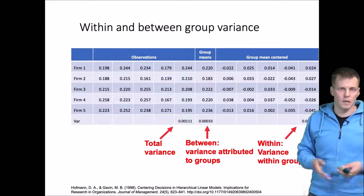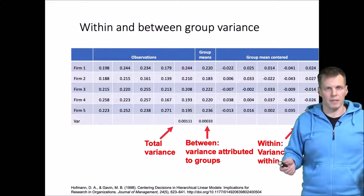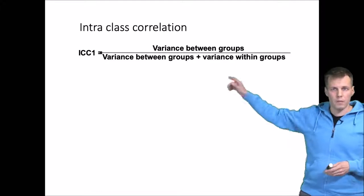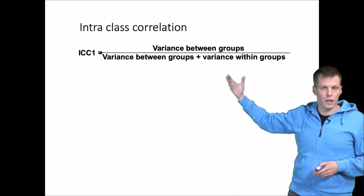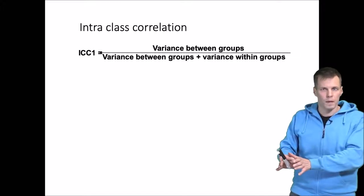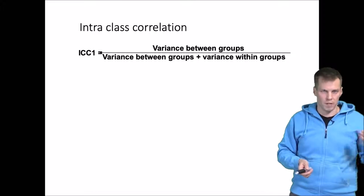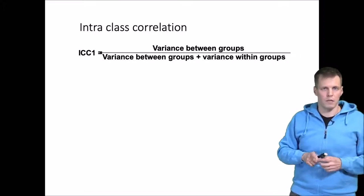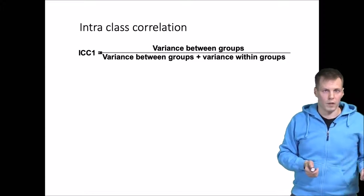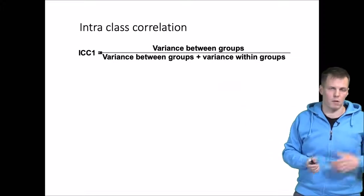Variance is a statistic that depends on scale, so it is useful to have a scale-free way to express on which level the data varies — and this is where intraclass correlation comes into play. ICC1 is calculated as the variance between groups divided by the total variance. It answers the question: how much of the variation in the data is attributed to the groups versus within the groups? This is called ICC1 because there are other types of intraclass correlations; the others mostly concern reliability of multiple raters, but ICC1 is the most important one for multilevel data.